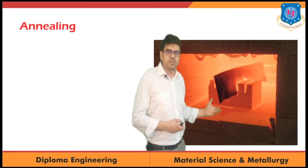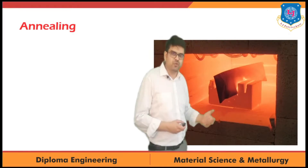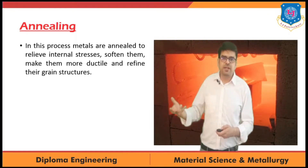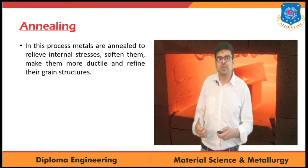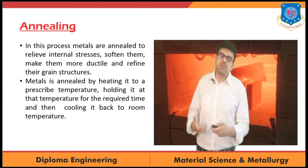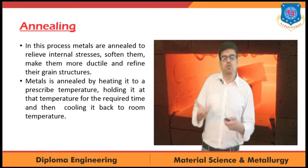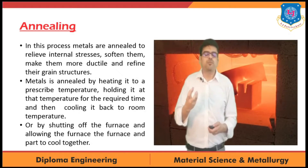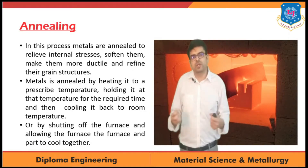As we can see here, there is a furnace and some object is placed inside for the heat treatment process. In annealing, metals are treated to relieve internal stresses, soften them, make them more ductile, and refine their grain structure. The metal is heated to a prescribed temperature, held at that temperature for the required time, and then cooled back to room temperature. Because of this annealing process, the product will become ductile and softer, so afterwards we can make wires from it.